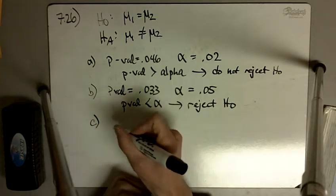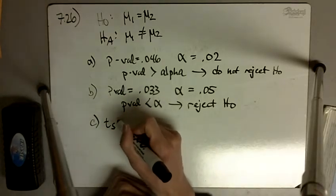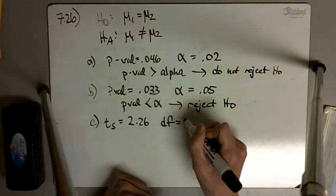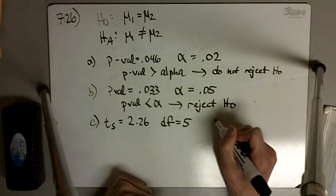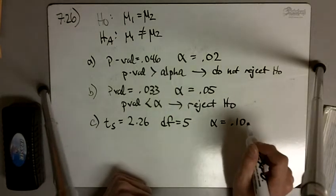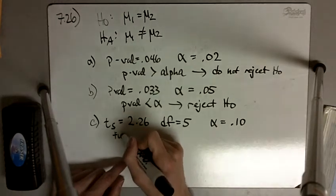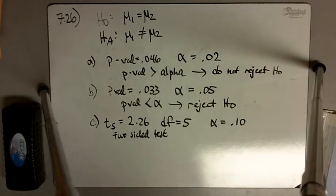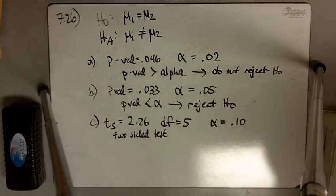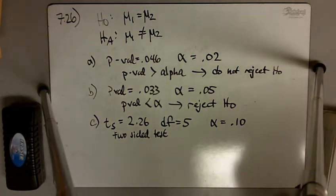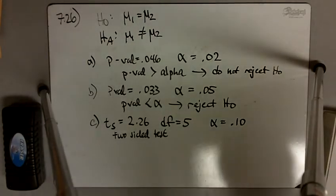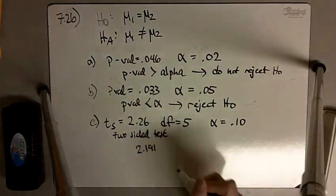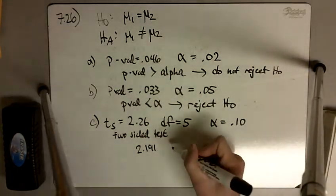Part C: our t-statistic is equal to 2.26, our degrees of freedom is equal to 5, and our alpha level is equal to 0.10. This is a two-sided test, so we must look up 2.26 with 5 degrees of freedom. The closest numbers I can find are 2.191 and 2.422.